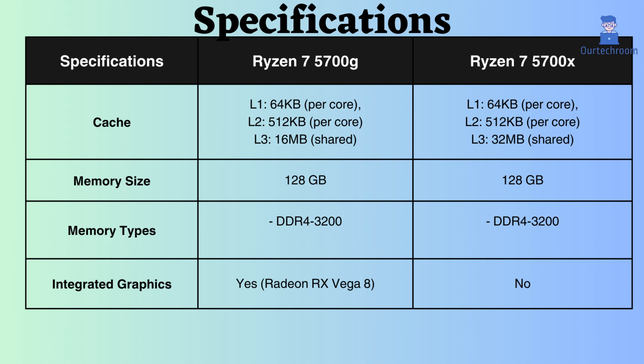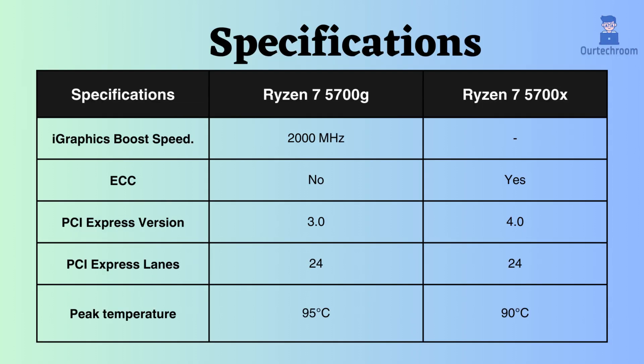Consequently, for graphical tasks, the Ryzen 7 5700G performs better — though here we are not taking dedicated graphics into consideration. The Ryzen 7 5700X supports ECC memory, whereas the Ryzen 7 5700G does not. Therefore, for critical systems, the Ryzen 7 5700X is preferable.